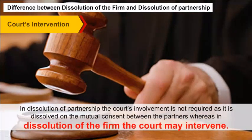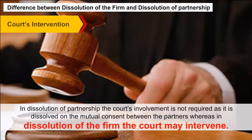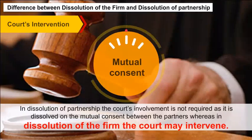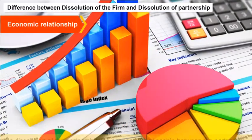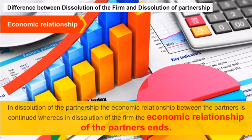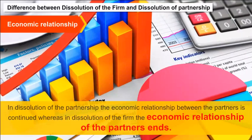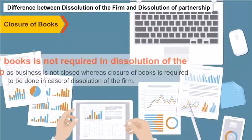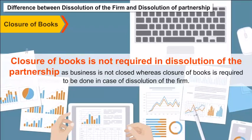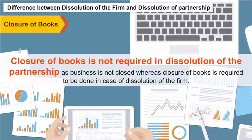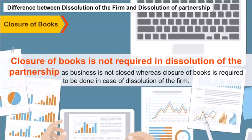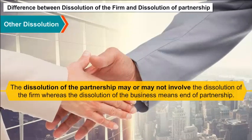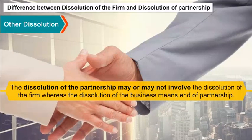Court's Intervention: In dissolution of partnership, the court's involvement is not required as it is dissolved on mutual consent between the partners, whereas in dissolution of the firm, the court may intervene. Economic Relationship: In dissolution of partnership, the economic relationship between the partners is continued, whereas in dissolution of the firm, it ends. Closure of Books: Not required in dissolution of partnership, but required in dissolution of the firm. Other: The dissolution of partnership may or may not involve dissolution of the firm, whereas dissolution of the firm means end of partnership.